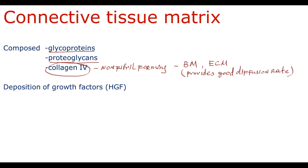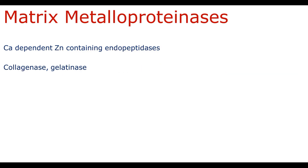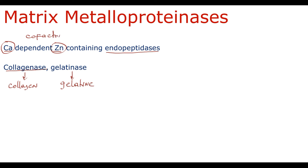Connective tissue matrix also serves as a depot for growth factors. Matrix metalloproteinases are a collective name for calcium-dependent, zinc-containing endopeptidases. The most well-known are collagenase, which degrades collagen molecules, and gelatinase, which degrades gelatin — irreversibly hydrolyzed collagen. This name emphasizes their dependence on metal ions, as calcium and zinc are cofactors of these enzymes. Their activity is regulated by tissue inhibitors of matrix metalloproteinases. The function of metalloproteinases is to degrade connective tissue, which is why they are so important in the reversion of cirrhosis processes.